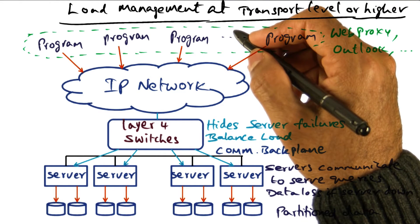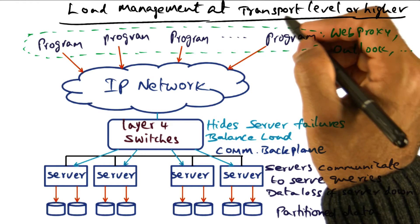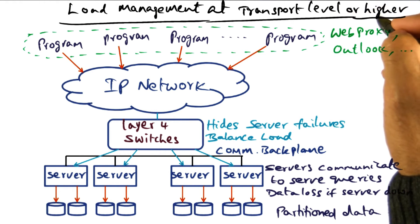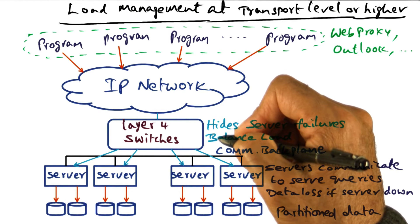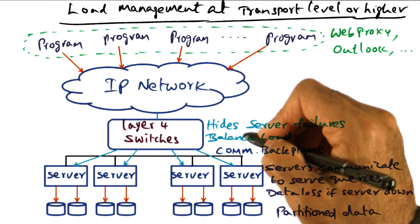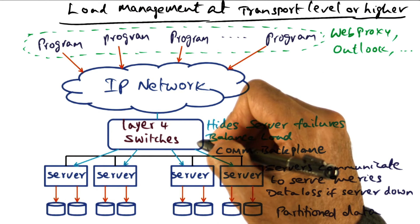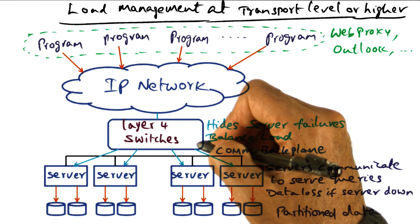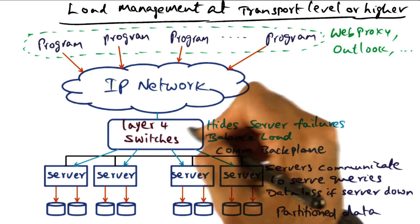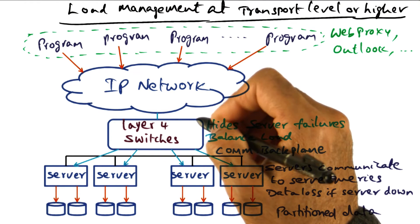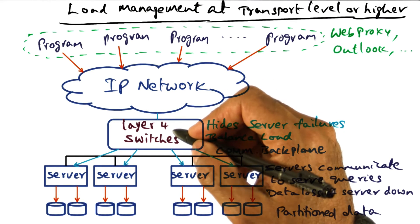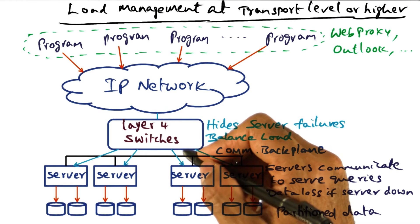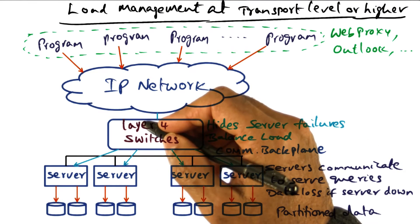We now move the load manager up in the OSI reference model to the transport level or even higher. The load manager could be layer 4 switches — that is, transport level switches or higher. In fact, the layer 4 switches may be architected as switch pairs so that there is hot failover from one failed switch to another at the load balancer level. Architecting the load balancer at the transport or higher levels gives the opportunity to dynamically isolate down server nodes from the external world.